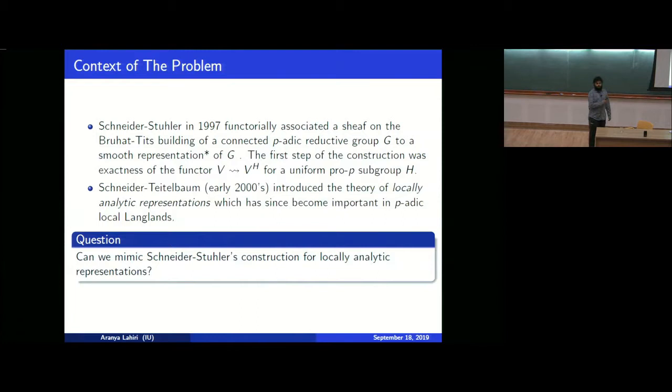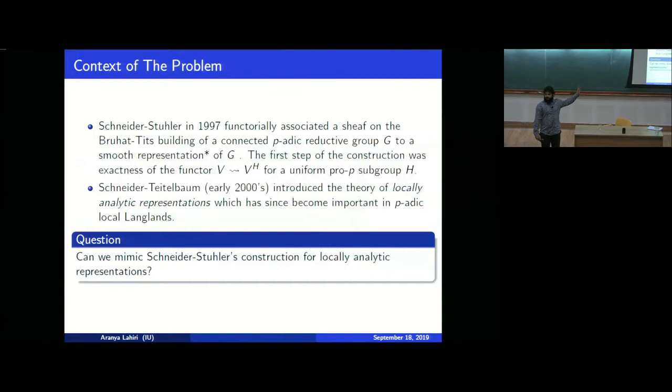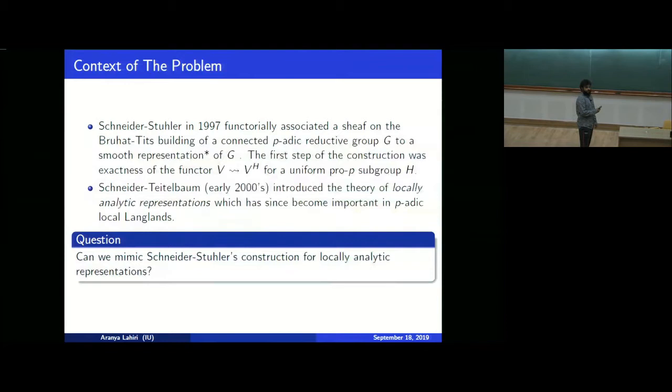It's natural to ask: can we mimic Schneider-Stuhler's construction for smooth complex representations in the case of locally analytic representations? That's the key motivating question in my work. The first step of Schneider-Stuhler was the observation that the functor taking a representation to its invariants by some parahoric subgroup H is exact. The part I want to concentrate on today is whether the analog of this is true for locally analytic representations — and the answer is yes, if we interpret this correctly.